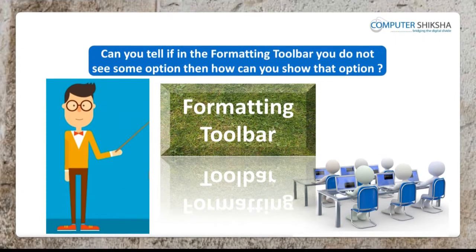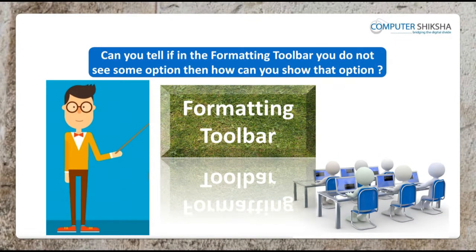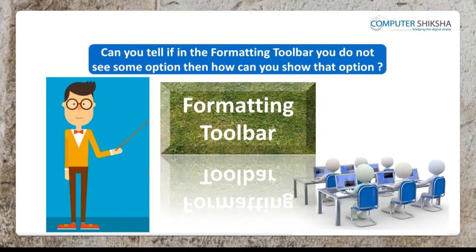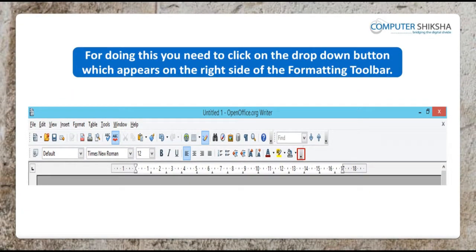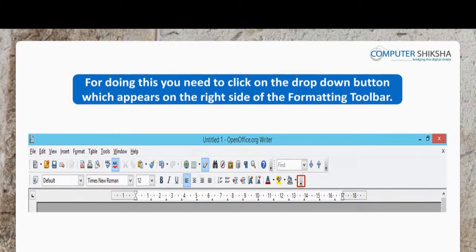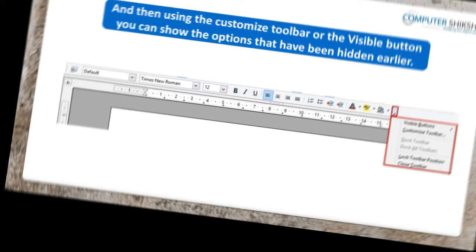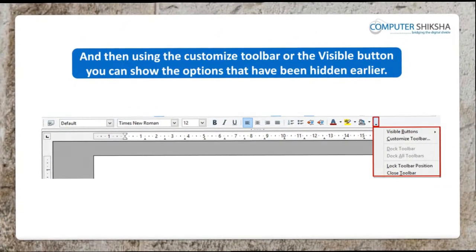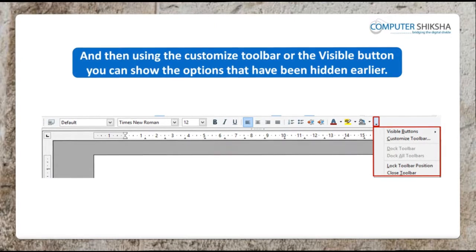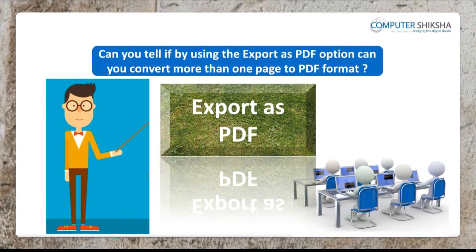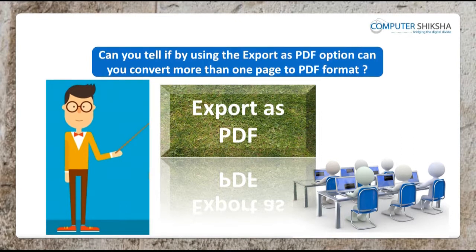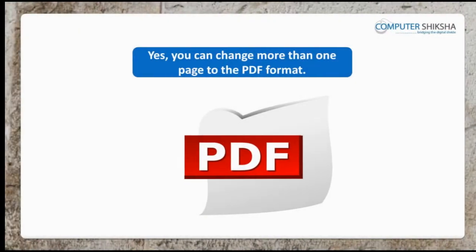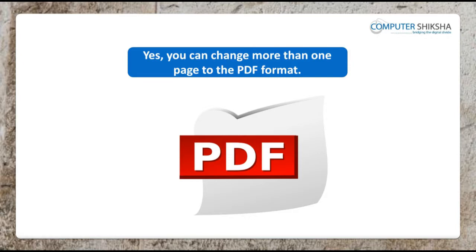Can you tell, if in the formatting toolbar you do not see some option, then how can you show that option? For doing this, you need to click on the drop-down button which appears on the right side of the formatting toolbar. Then using the customize toolbar or the visible button, you can show the options that have been hidden earlier. Can you tell if by using the export as PDF option you can convert more than one page to PDF format? Yes, you can change more than one page to the PDF format.